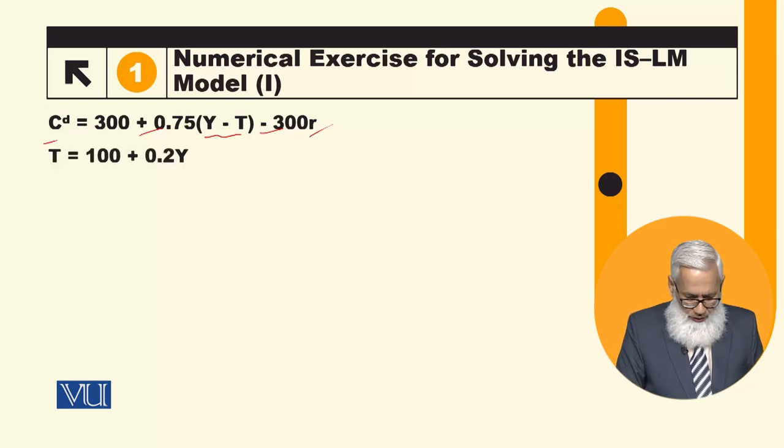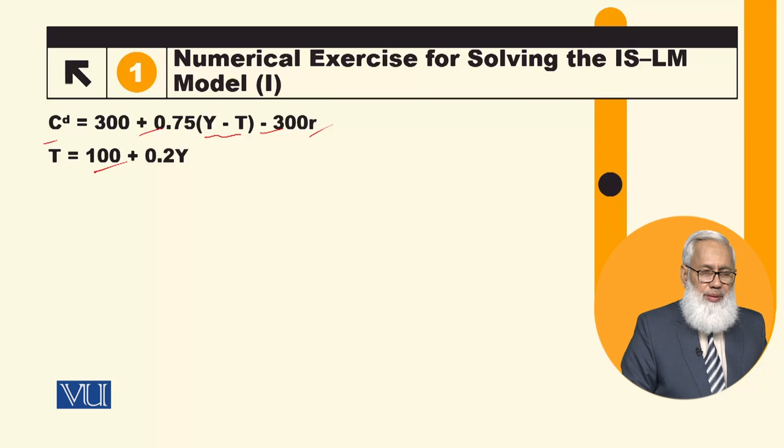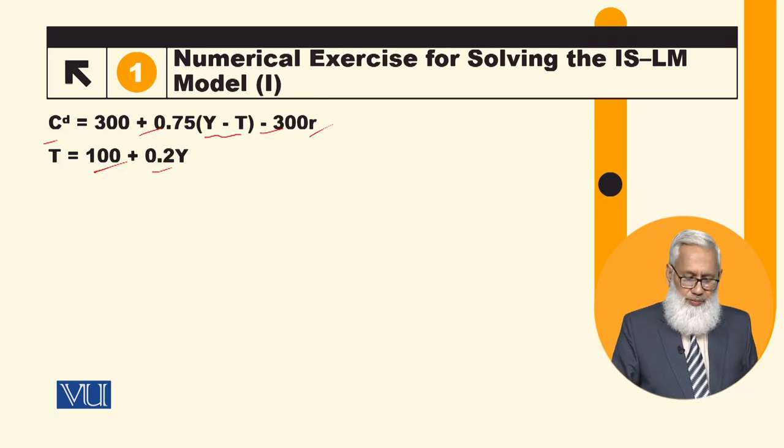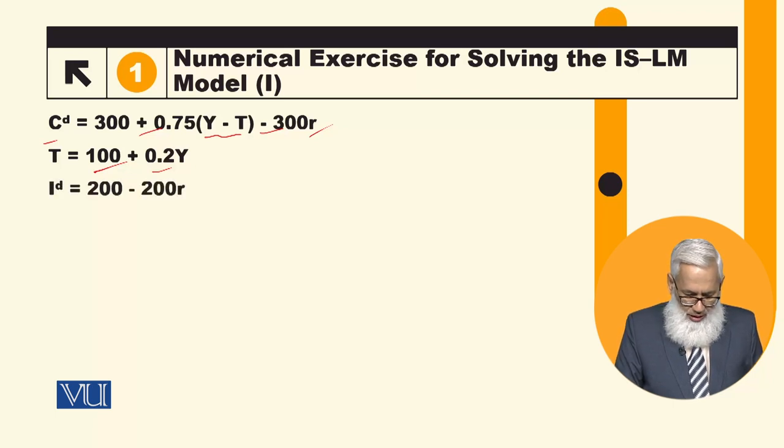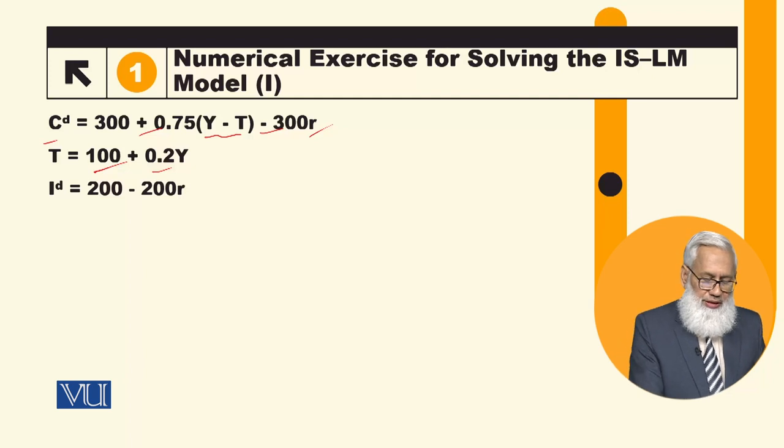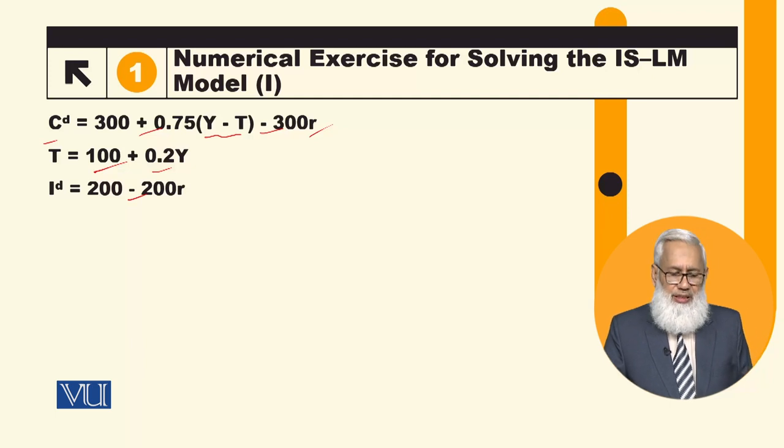Second, the information is given. This is the tax function T, total tax which is 100, which is the lump sum taxes, and 0.2, which is the tax rate multiplied by income.